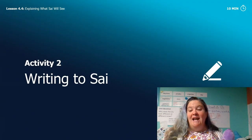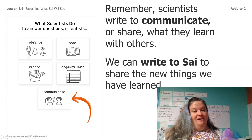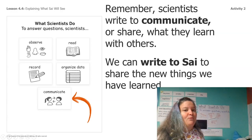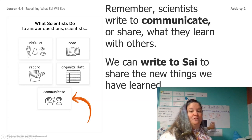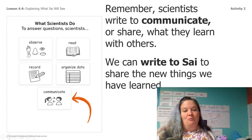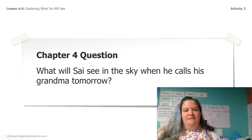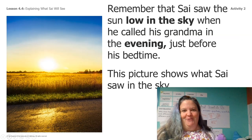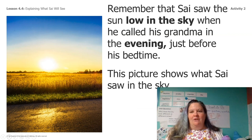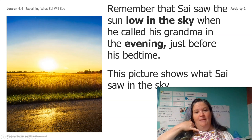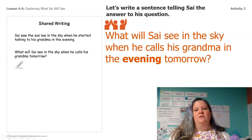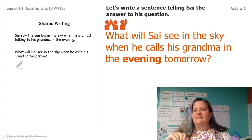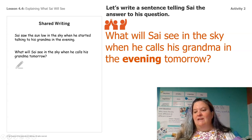We should have enough information now to answer Sai's question. Let's give it a shot. As scientists, we write to communicate. One thing that we do is write to communicate. So we're going to write to Sai to tell him what we learned. Sai's question was: what will Sai see in the sky when he calls his grandma tomorrow? Sai saw the sun low in the sky when he called his grandma in the evening, just before his bedtime. This picture shows what Sai saw in the sky. Sai wants to know what he'll see in the sky when he calls his grandma in the evening tomorrow.